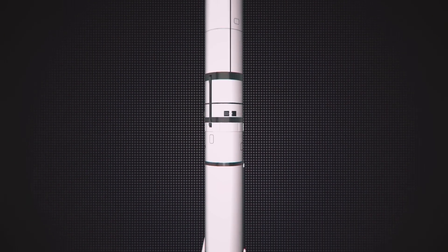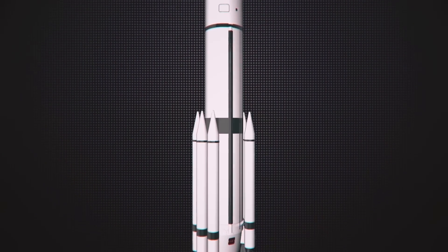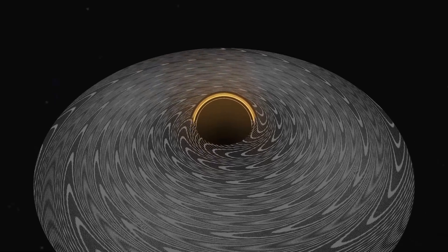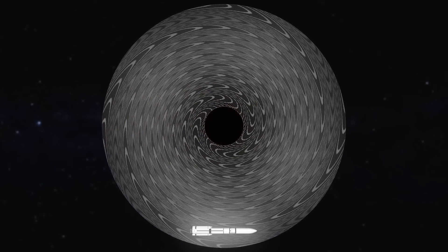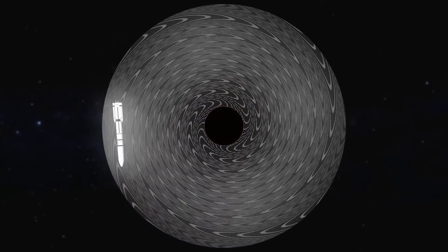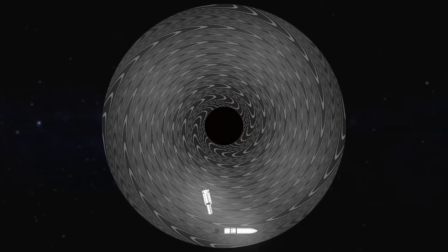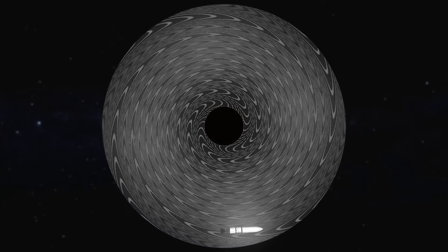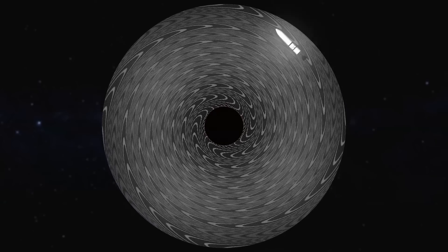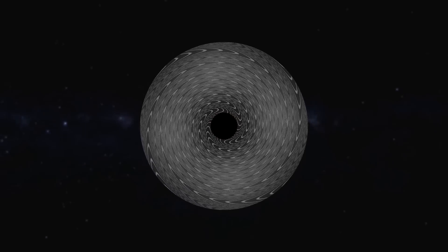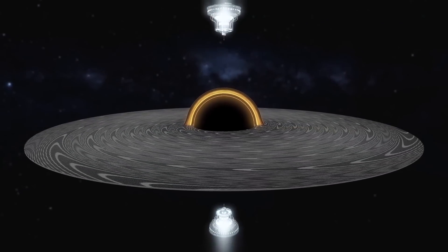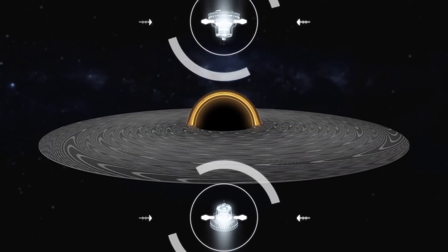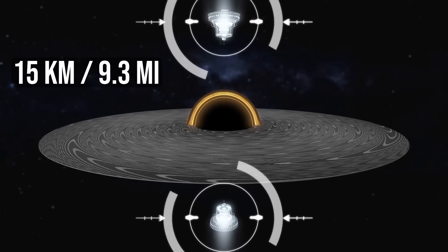Penrose suggested launching a two-stage rocket into the Ergosphere. The propellant falls to the event horizon and disappears for good. The remaining part of the rocket gets sped up by the excess energy produced by the rotating black hole and darts out of the Ergosphere at a much greater speed than it previously moved at. To build the generator, we need to erect two stations near a black hole, each around a dozen kilometers long.